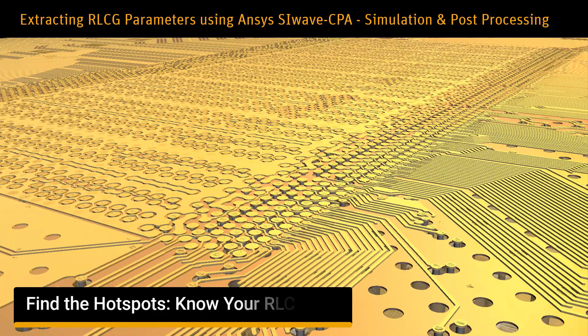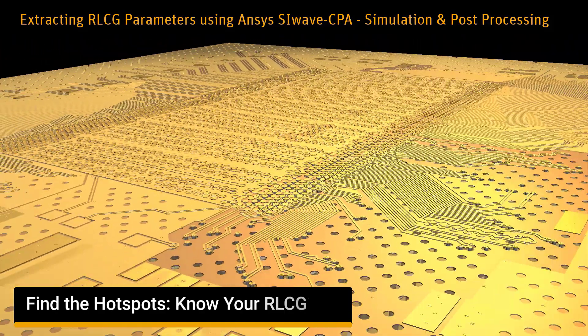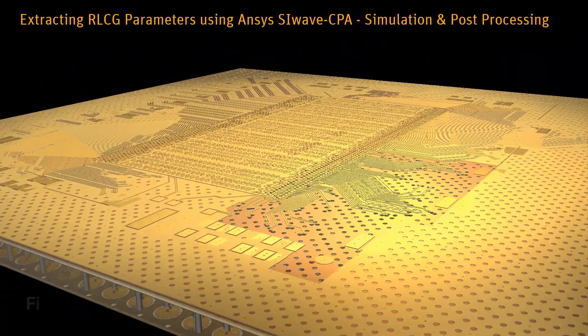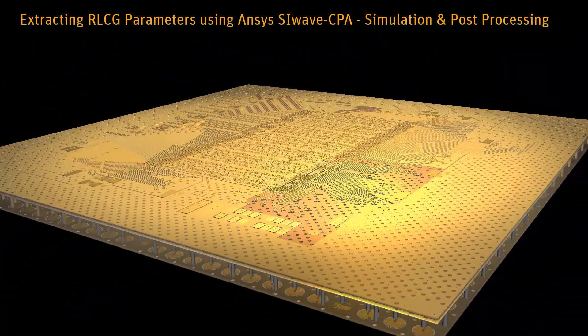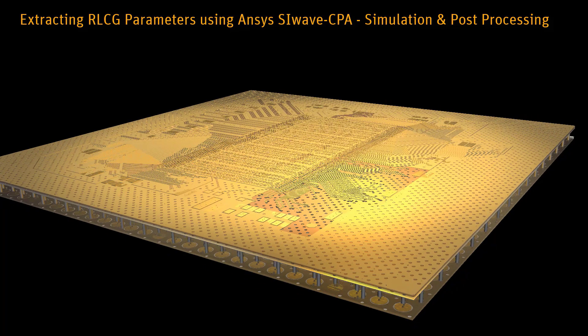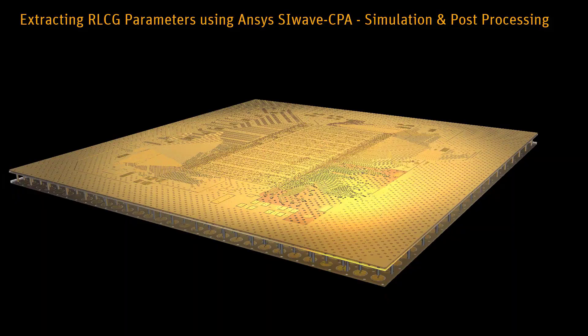In the previous video, we introduced SIWAVE CPA and described different ways of creating PIN groups. We ran a hotspot analysis that automatically produced smart PIN groups. In this part, we'll use these smart PIN groups and extract the power and ground nets of the package.